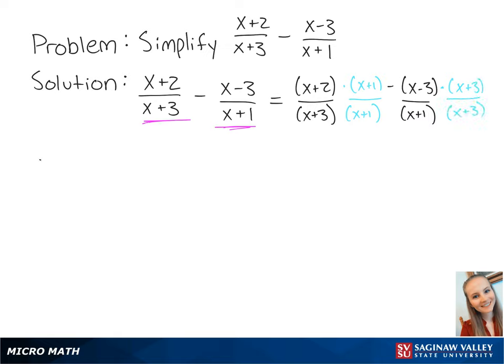When we multiply this out, we're going to get x squared plus 3x plus 2 over x squared plus 4x plus 3 minus x squared minus 9 over x squared plus 4x plus 3.